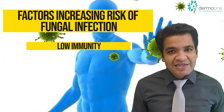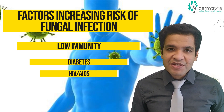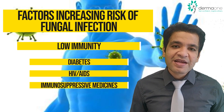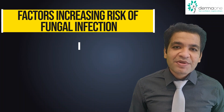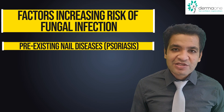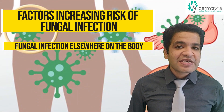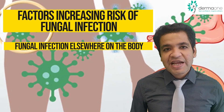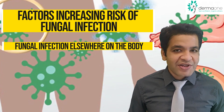If you have any diseases which are lowering your immunity, for example diabetes or HIV, or if you are taking medicines that lower your immunity, there are high chances that you may get a nail fungal infection. If there is any pre-existing nail disease, for example nail psoriasis, that also increases the risk. Additionally, if you have a fungal infection anywhere else in your body — for example the groins — and you are using your nails to scratch that area, that may also infect your nails.